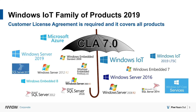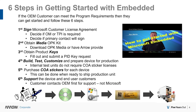Windows 10 IoT Enterprise LTSC 2019 requires that you sign an agreement — it's a no cost, no commitment, no minimum purchase agreement where you basically say 'I'm only going to use this product for an appliance, not for a general-use computer.' It's one agreement called a Customer License Agreement version 7.0, and it covers all of these products. By signing this agreement you get access to all of these products for testing. Once it's approved, we'll get you the media, get you a product key, and you can start testing and customizing.